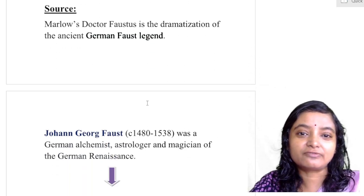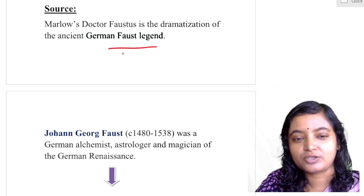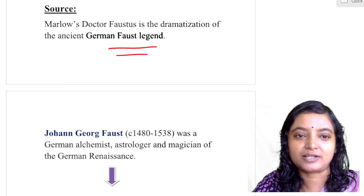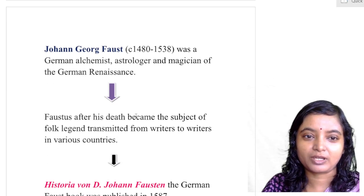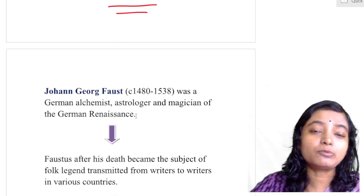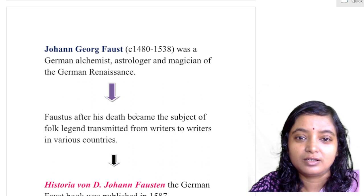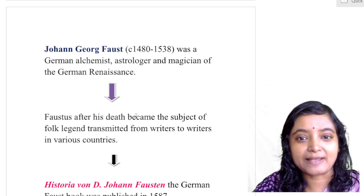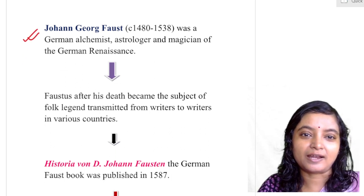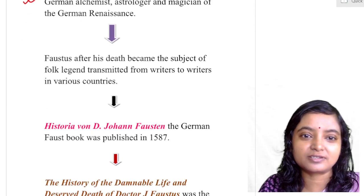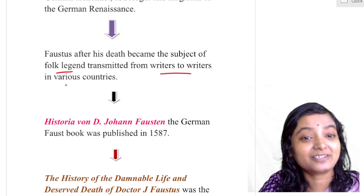Source: Marlowe's Dr. Faustus is a dramatization of the ancient German Faust legend. From the ancient Faust legend — that was the original source of Marlowe's Dr. Faustus. Johann Georg Faust was a German alchemist, astrologer, and magician of the German Renaissance. He is the main character, and after the death of Faustus he became the subject of folk legend, transmitted from writer to writer in various countries.